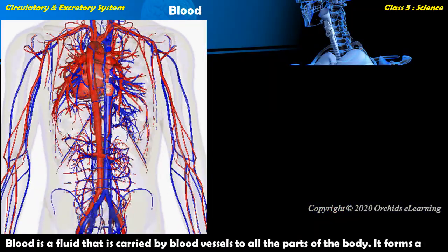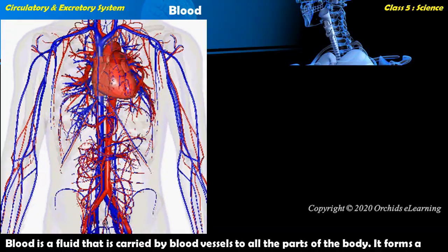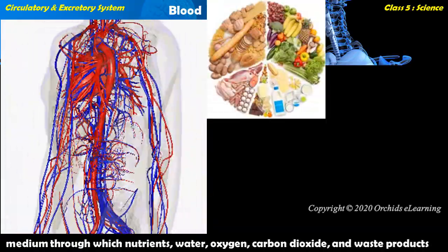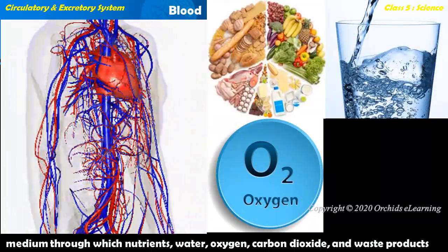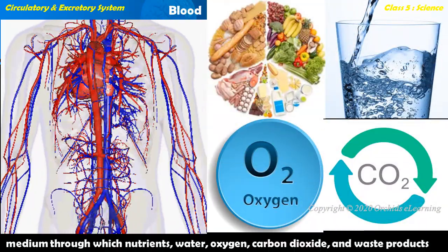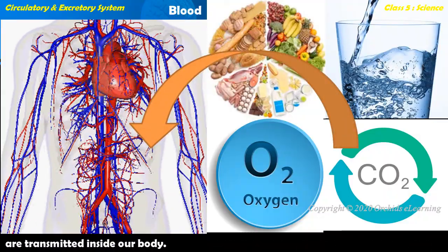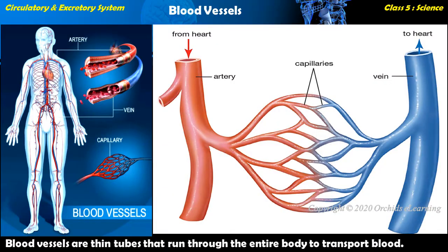Blood forms the medium through which nutrients, water, oxygen, carbon dioxide, and waste products are transmitted inside our bodies. Blood vessels are thin tubes that run through the entire body to transport blood. Arteries, veins, and capillaries are the three types of blood vessels.